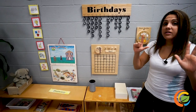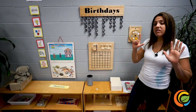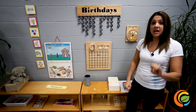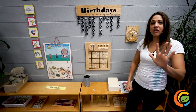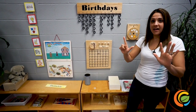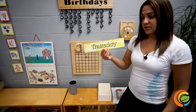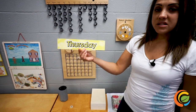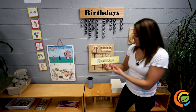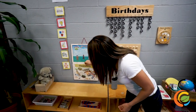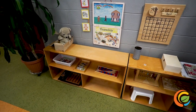There are seven days, there are seven days, there are seven days in a week. Sunday, Monday, Tuesday, Wednesday, Thursday, Friday, Saturday. The day of the week is Thursday. The day of the week is Thursday. It's Thursday all day long.